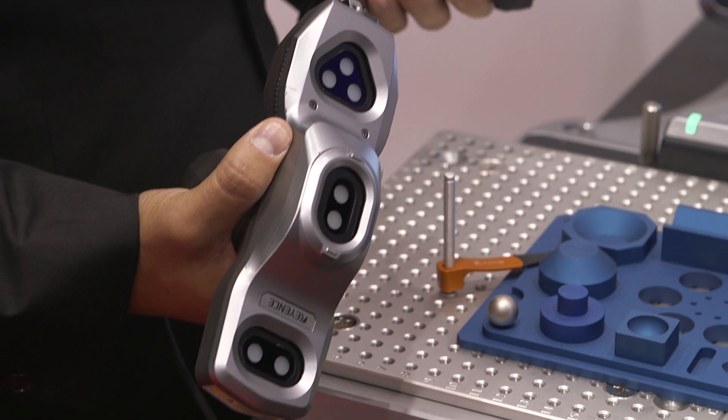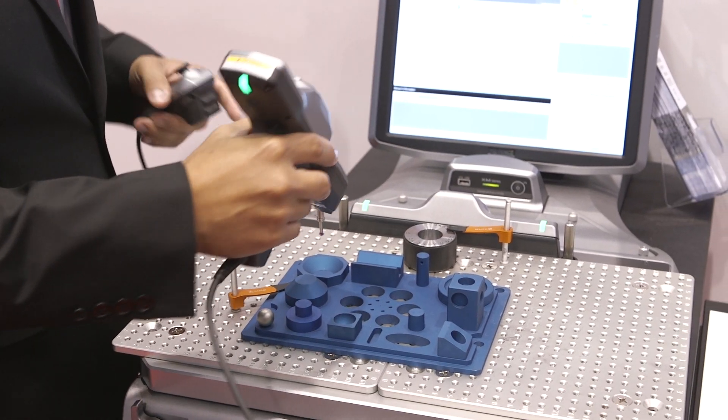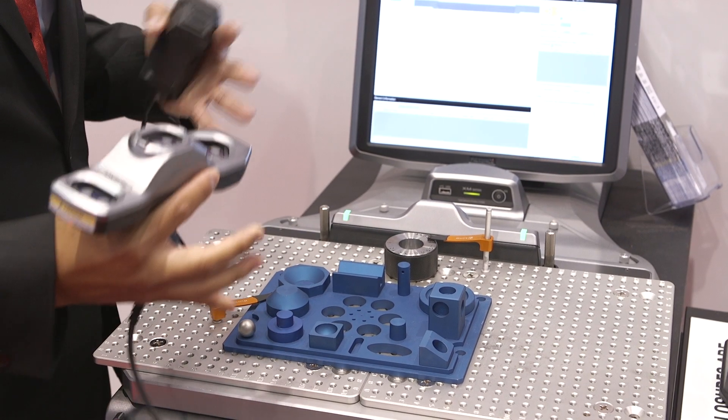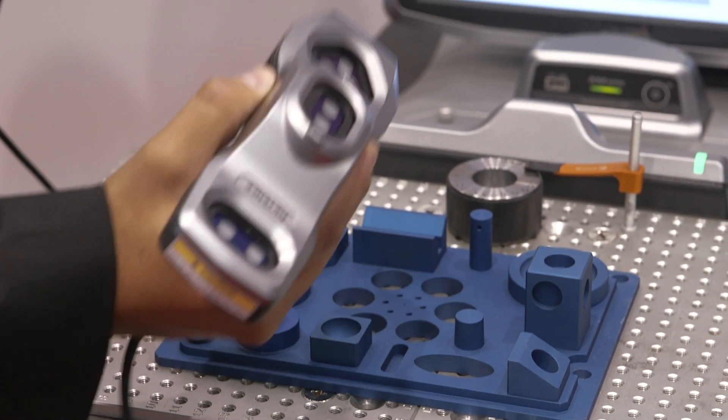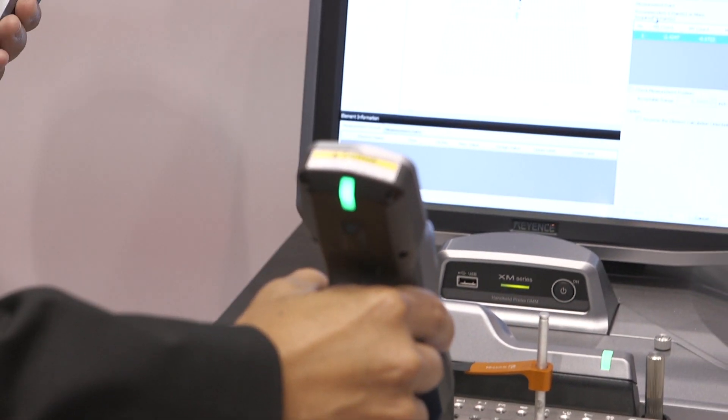And are you finding that these products are typically used by cutting shops or does additive use it as well? Pretty much limitless applications because in this case, any part that you can place on the stage can be read and measured while the handheld CMM is a contact-based measurement.